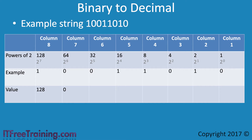Another simple way to do this is to multiply the values together: 1 times 128 is 128, 0 times 64 is 0. I will complete the rest of the table now. Column 6, binary value is 0, so the value will be 0. Column 5, binary value is 1, so the value will be 16. Column 4, binary value is 1, so the value will be 8. Column 3, binary value is 0, so the value will be 0. Column 2, binary value is 1, so the value will be 2. Lastly, column 1, binary value is 0, so the value will be 0.